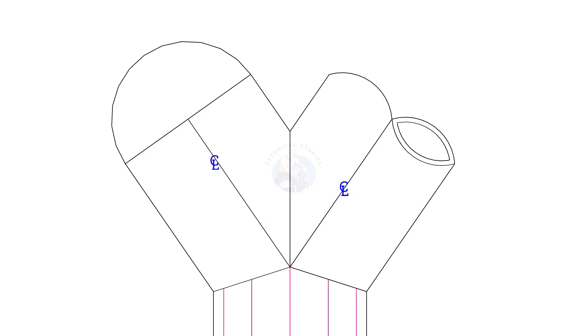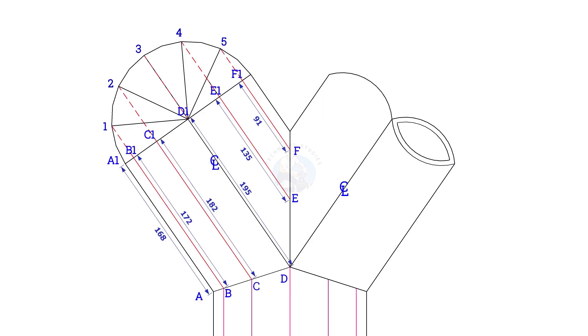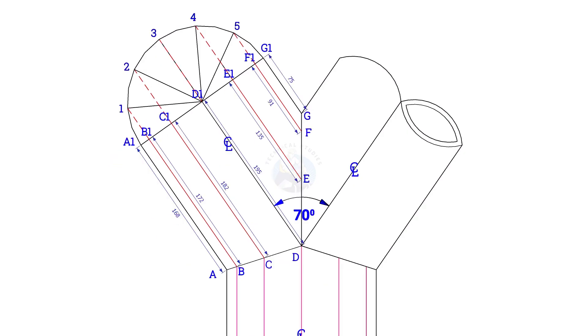To lay out the true length of the branches, the process is the same. Draw a half circle and divide it into 6 parts. Draw perpendicular lines as shown. Note down the lengths.